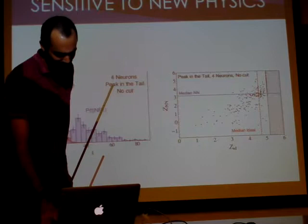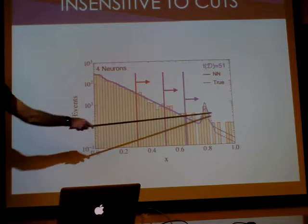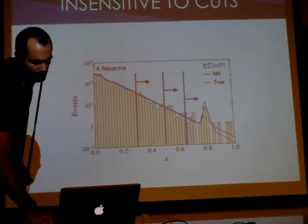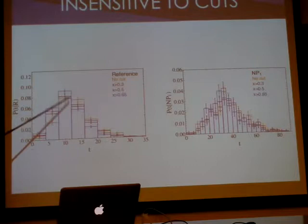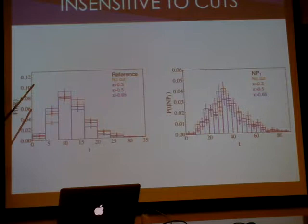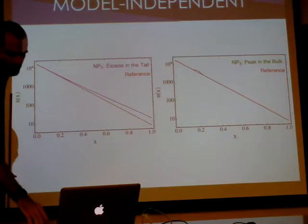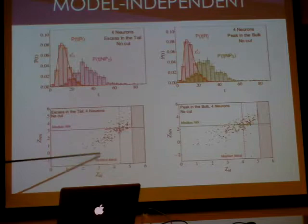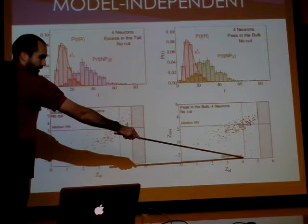Now cats: I take this simple example and give the network, instead of the full dataset, something that goes from 0.3 onwards, 0.5 onwards, or 0.65 onwards. And the network doesn't care. If you look at the distribution of the test statistic in the standard model hypothesis and in the new physics hypothesis, they're essentially the same within statistical errors. Then, let's check other shapes — an excess in the tail or a bump in the bulk. It works in exactly the same way: the ratio between the ideal and the network's significance is the same as before.